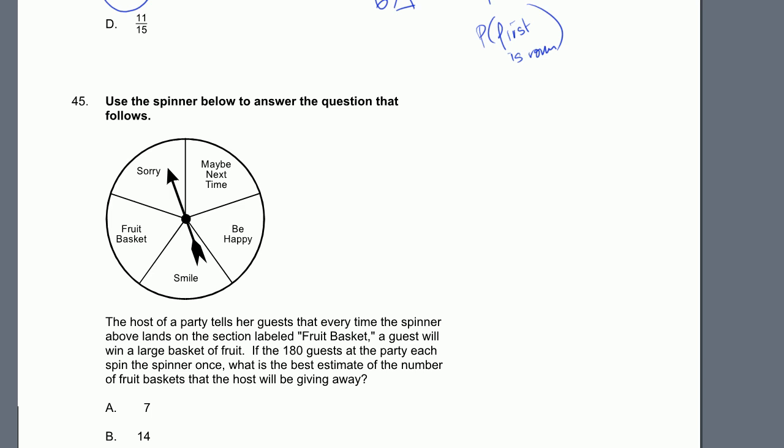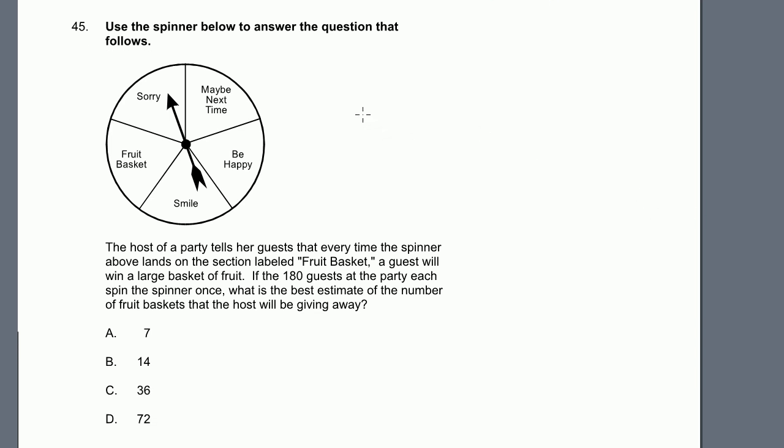Problem 45. Use the spinner below to answer the question that follows. There's our spinner. The host of a party tells her guests that every time the spinner above lands on the section labeled fruit basket, a guest will win a large basket of fruit. If the 180 guests at the party each spin the spinner once, what is the best estimate of the number of fruit baskets that the host will be giving away?